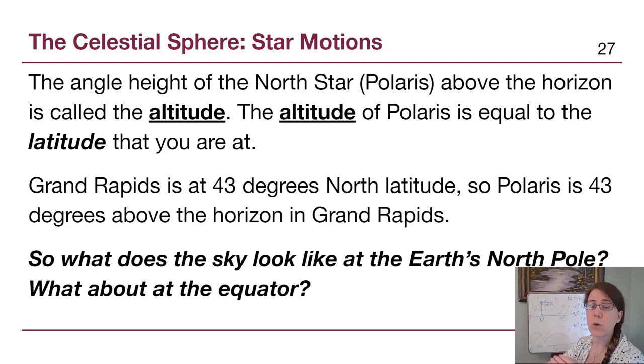Latitude is how far above or below the equator that we are. The equator is at zero degrees latitude. There's a really key and useful thing about Polaris. The height above the horizon, the altitude that we see Polaris, is the same number value as the latitude where we are currently standing. For Grand Rapids, if we're at 43 degrees north latitude, then Polaris is 43 degrees above the horizon. That's pretty close to halfway between zero and 90, so if you're in the continental United States, the north star is about halfway up in your sky.